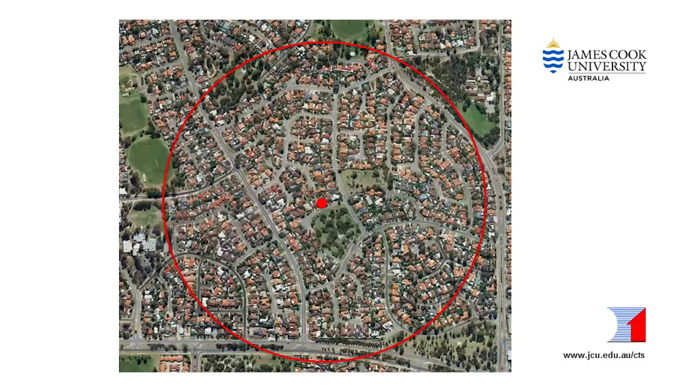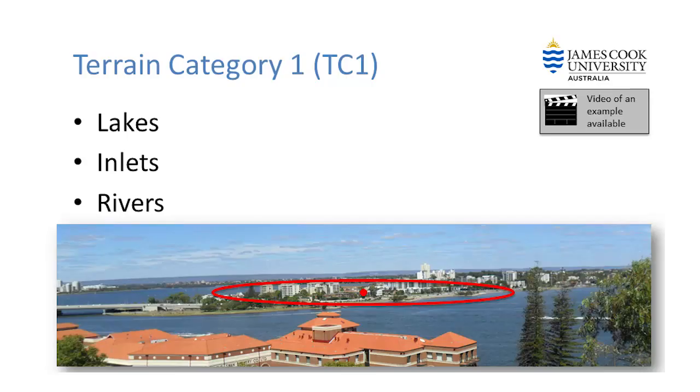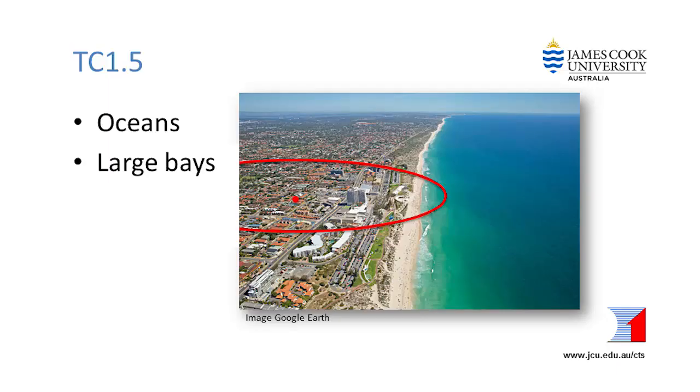Look at what is within a 500 metre radius circle centred on the site. Clause 2.3 defines five terrain categories — one is the smoothest and three is the roughest. Rougher terrain, that is ground with lots of obstructions like trees or buildings, can slow the wind as it passes over them. If there are different terrain categories within a 500 metre radius, the one with the lowest number is selected. If there are any rivers, inlets or lakes wider than 200 metres within any part of the circle, then the site is TC1. If there is any ocean within 500 metres, then the site is TC1.5.